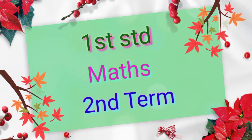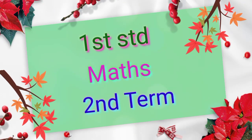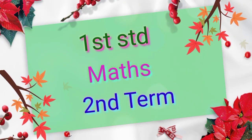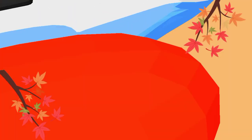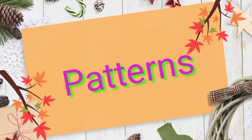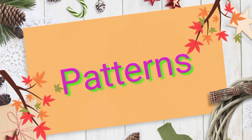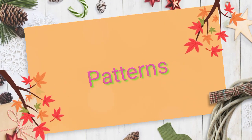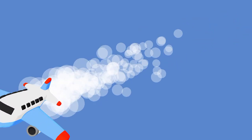Hello children, today we will learn about patterns. What is a pattern? A pattern is formed when objects or shapes are repeated uniformly in a specific way. What do you see here? A vase. This vase is made up of triangles, so it makes a pattern.